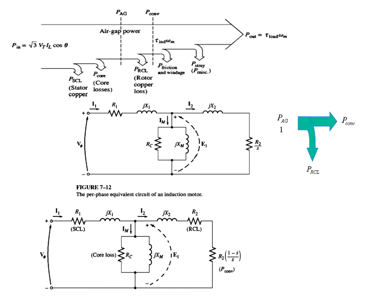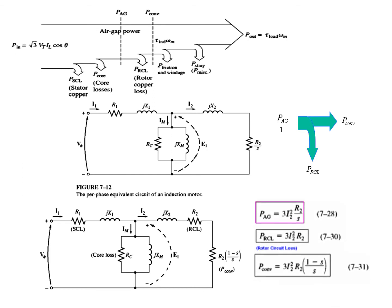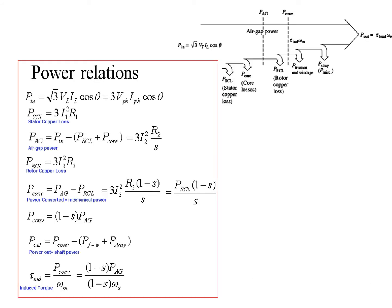So this is the final equivalent circuit. The powers and equations have been derived in the book so I will not go into the details. This is the equation for air gap power, this is the equation for rotor copper loss power, and this is the equation for power converted. For ease, I have jotted down all the formulas used in this chapter: the power input is written as 3 times power per phase, then stator copper loss, air gap power, rotor copper loss, and so on.